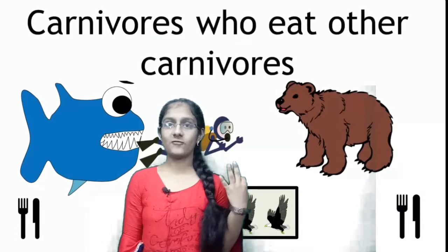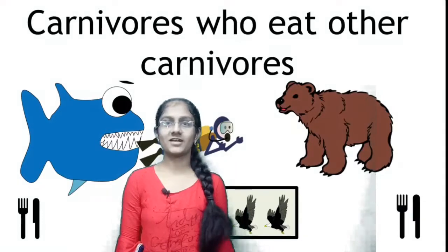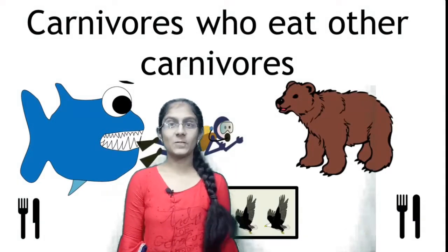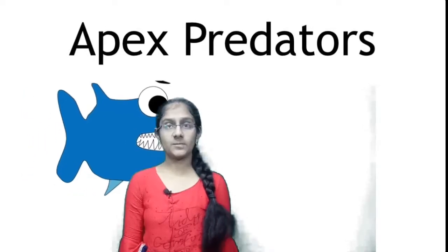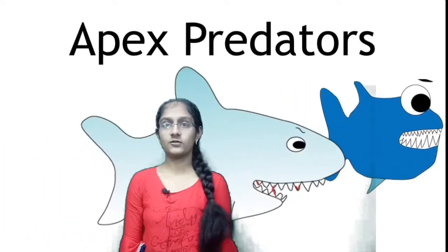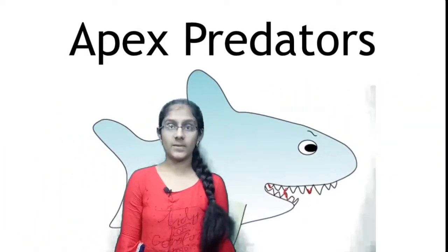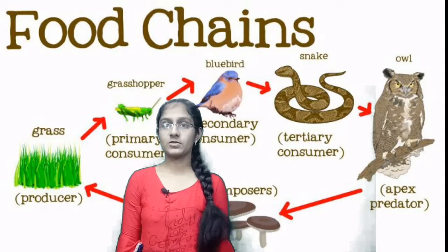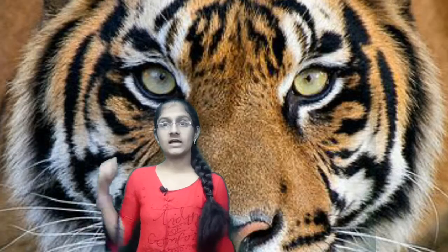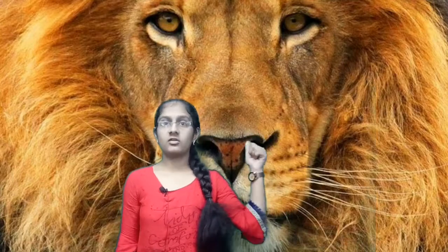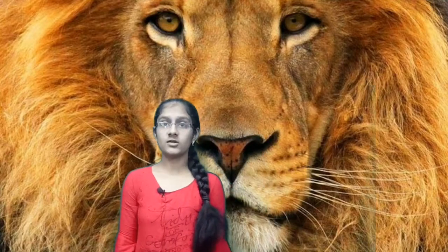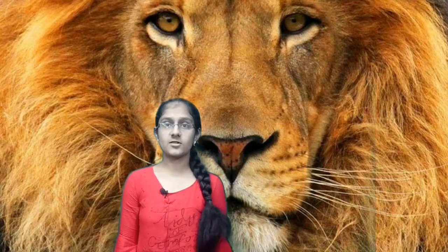Third, we see the apex or top consumer. The type of apex or top consumer is the carnivores, which depends upon the herbivores for their food. Examples of apex or top consumer: tiger and lion. No other animal feeds on the apex consumer.